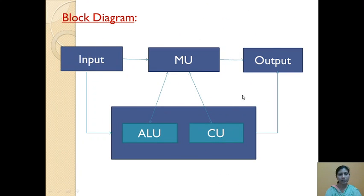In the block diagram of a computer system: input unit, MU means memory unit, output unit, ALU means arithmetic and logical unit, and CU means control unit. Both ALU and CU together are called the CPU — central processing unit. Arrows in the diagram represent buses or connectors used to transfer data from one unit to another.